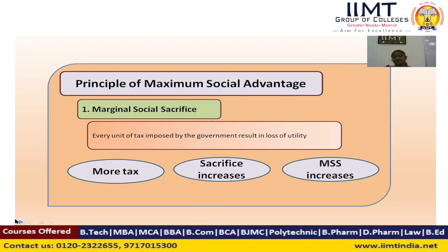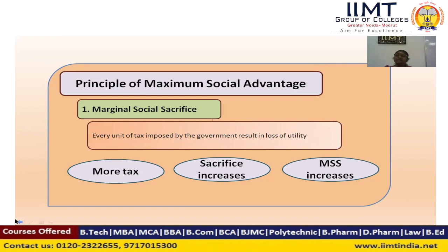Without paying the tax, you could have utilized that amount for buying so many things like dress materials, eatables, paying monthly installments for a vehicle, or paying the installment amount for a house loan. So many things you can utilize this money for if you are not paying the tax. Therefore, there is a loss of utility for each individual.